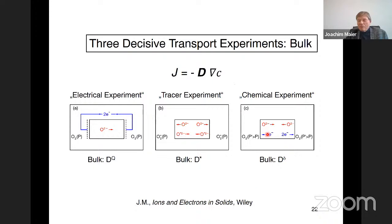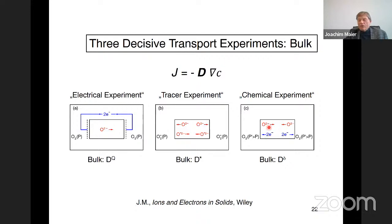The most important experiment is a chemical one, because very often the diffusion process simultaneously changes the composition. This is exactly what happens in strontium titanate: when you change the partial pressure, oxygen moves in — ions and electrons coupled — because formally neutral oxygen enters, but this is an ambipolar motion. The chemical diffusion coefficient therefore also includes properties of the electrons, making it fundamentally different.